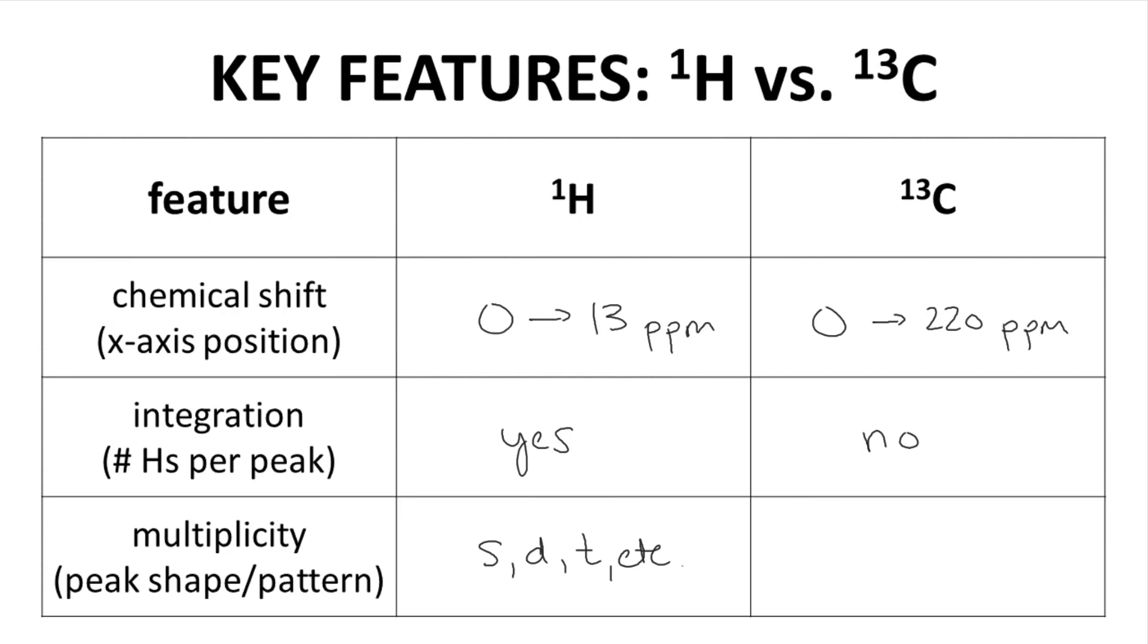How about a C13 spectrum? No multiplicity. All signals are singlets. While this is not completely true, most C13 NMR spectra are acquired in a manner that suppresses any peak multiplicity. Again, this is not a terrible loss, and the lack of multiplicity is not a huge limitation for C13 spectroscopy.